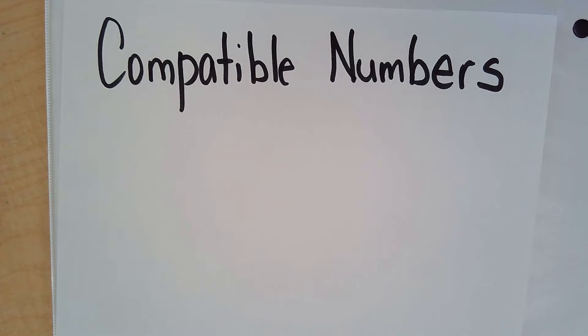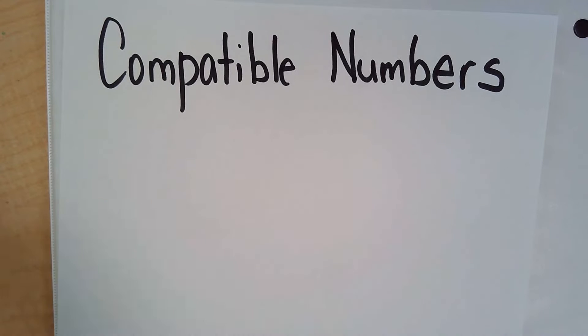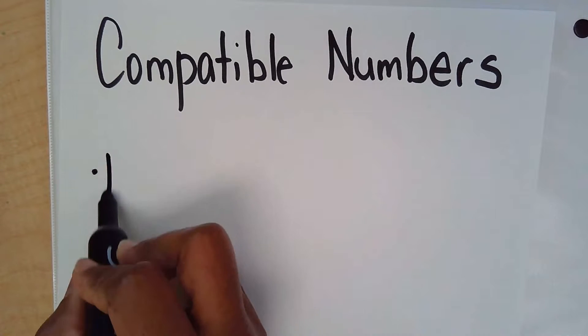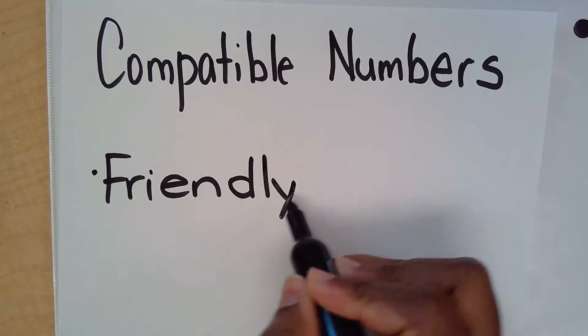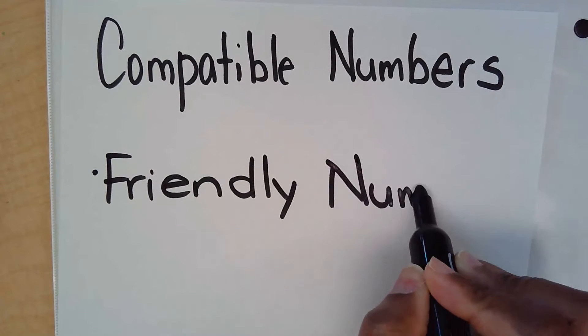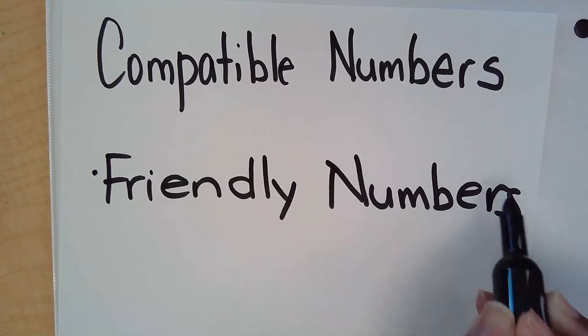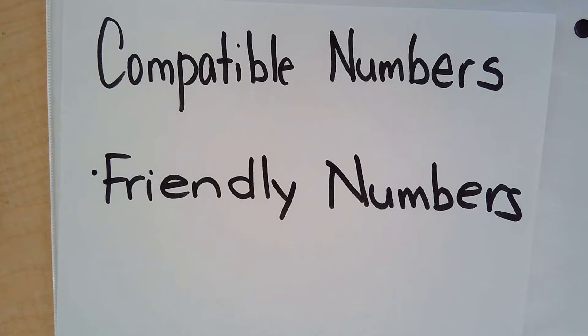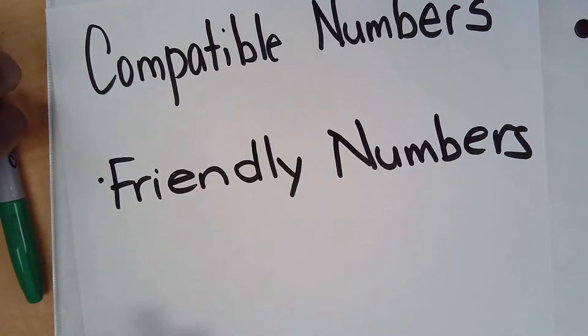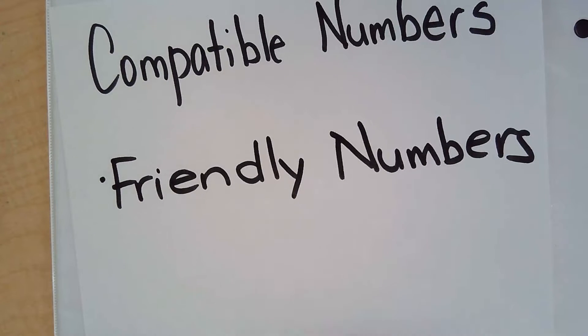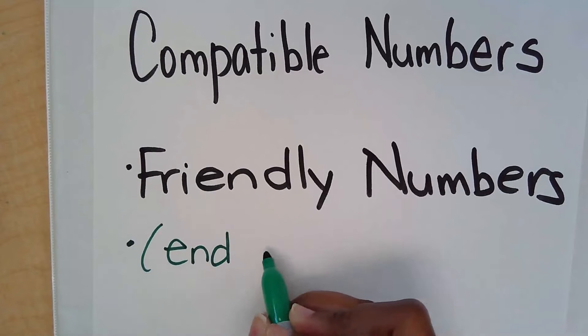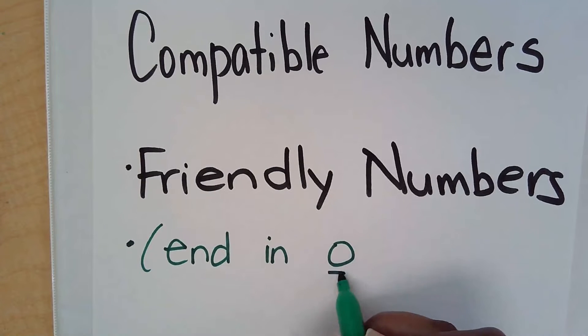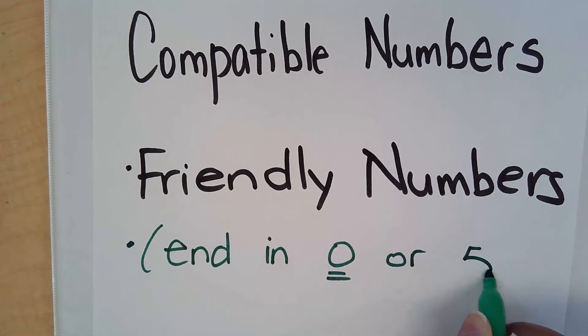One of the most important things for you to know about compatible numbers is that they are considered to be friendly numbers. They are friendly numbers, and what are friendly numbers? Numbers that usually end in zero or five.